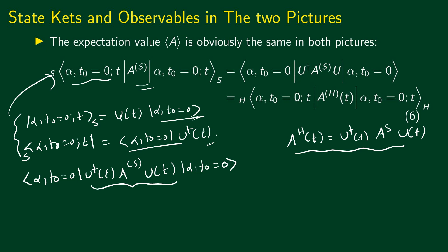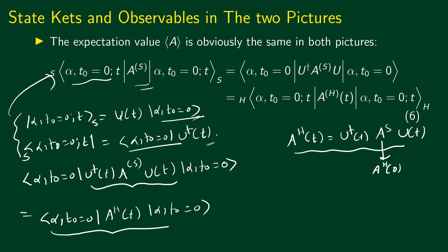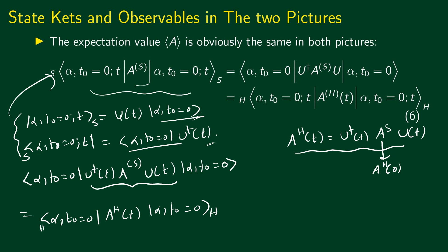Using the associative property, we see the expression U†(t) A^S U(t) is precisely A^H(t) — the Heisenberg picture operator. We already know that the Heisenberg and Schrödinger picture operators are related this way because the Schrödinger picture operator equals the Heisenberg picture operator at t = 0. Substituting, we get ⟨α, t₀=0| A^H(t) |α, t₀=0⟩, which is the expectation value of the operator at time t in the Heisenberg picture.